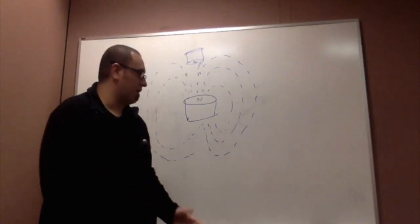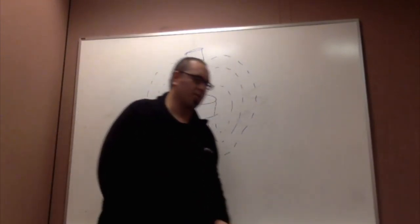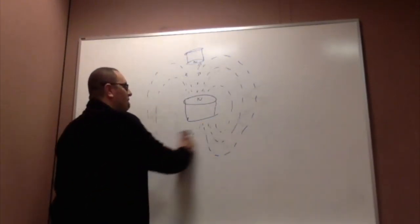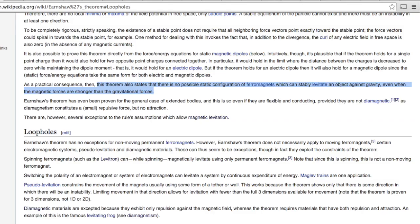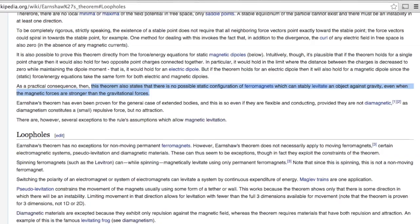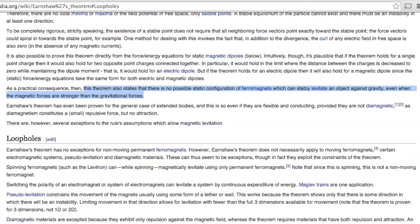So, for a very long time, Earnshaw was this guy back in the 1800s, he was a mathematician, and quite a naysayer, if I do say so myself. He said it's not possible to levitate anything using magnets.